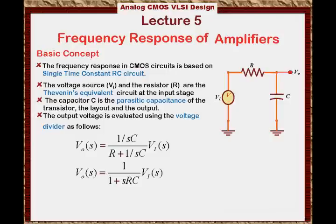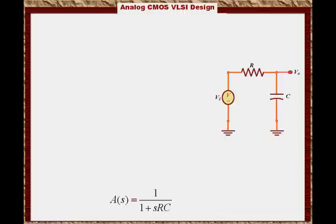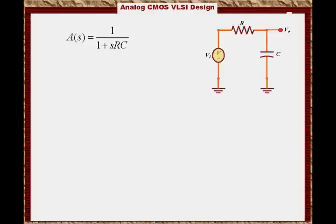And if I take the output over the input ratio, which is Vout of S over VI of S, this is basically the gain of the circuit A of S, and that will equal to 1 over 1 plus SRC. That is very exciting. Now we know what's the gain of this particular circuit in the frequency domain. It's nothing but a voltage divider.